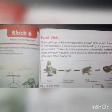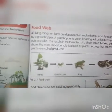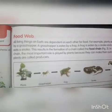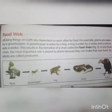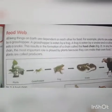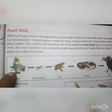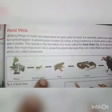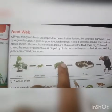All the living things on earth are dependent on each other for food. For example, plants are eaten by a grasshopper, and a grasshopper is eaten by a frog.